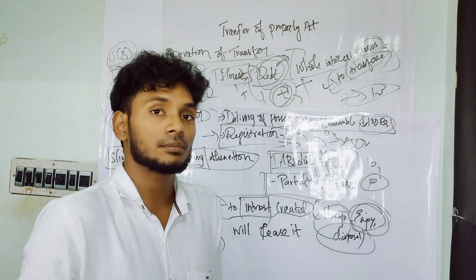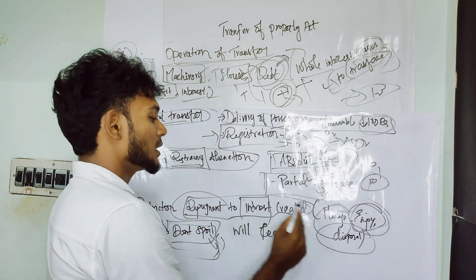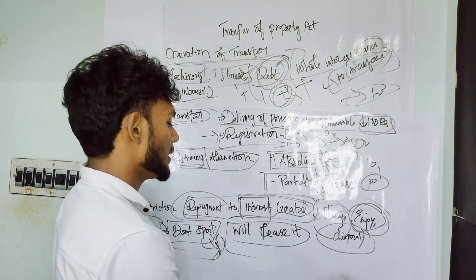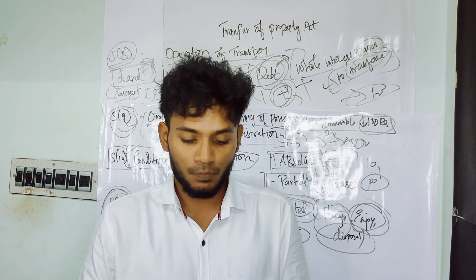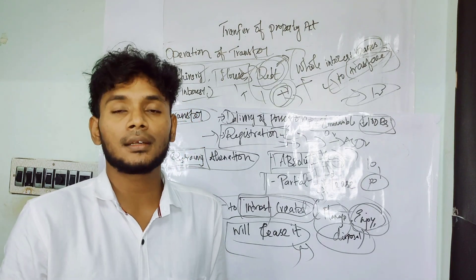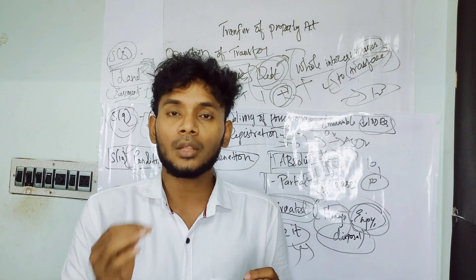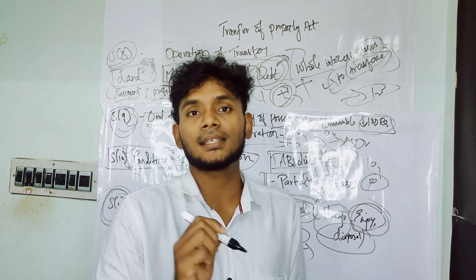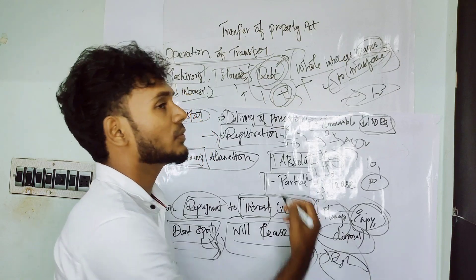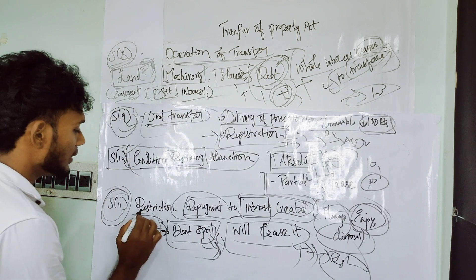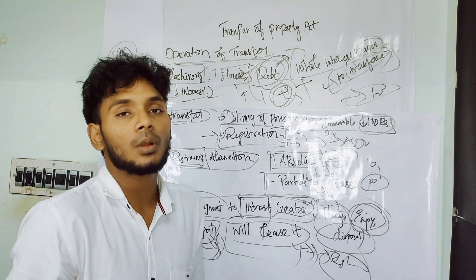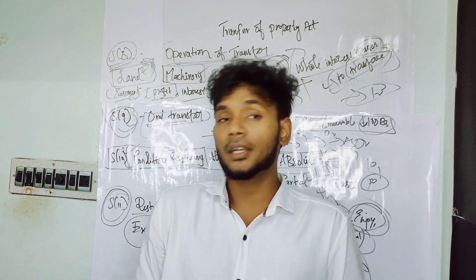You have put some conditions under Section 11 - restriction repugnant to interest created. For example, don't spoil it - you have to put a condition like that. Suppose you have an institution and you put a condition that it is running under your institution, one unit run industrially. Within the timing, if the condition is not met, the full interest is cut and you will seize it. That is Section 11 restriction repugnant to interest created. So Sections 8, 9, 10, and 11 of the Transfer of Property Act - tomorrow we will see Section 12.